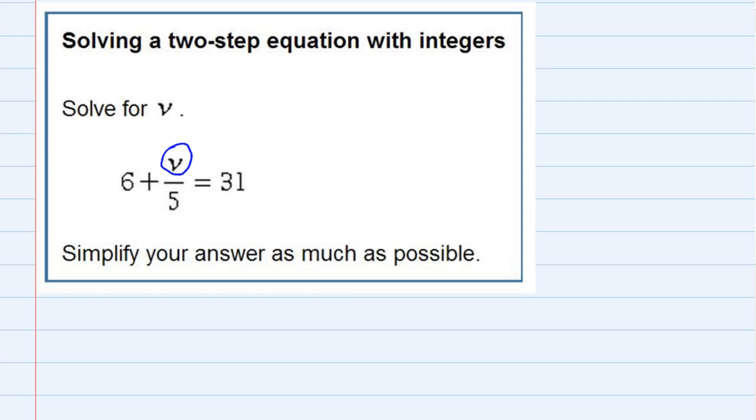The first thing I want to do is move any terms that do not have v over to the other side. So in this case, that means the 6. I would like to move it to the other side, so what I can do is I can subtract 6 from the left-hand side, as long as I also subtract 6 from the right-hand side.